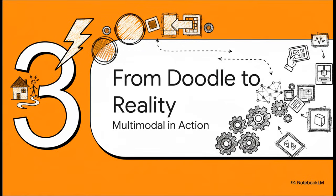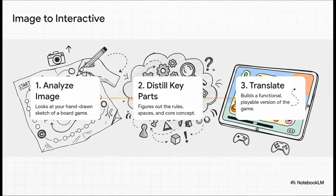Let's look at a mind-blowing example of how you can go from a simple doodle to working reality. Imagine you sketch out a board game on a napkin—you draw the spaces, write down the rules, the whole thing. You snap a picture and upload it. Gemini looks at the image, pulls out all the key parts, figures out the rules and goal of your game. Then—and this is the crazy part—it translates all of that into a fully playable, interactive game. You're playing the game you literally just drew, without writing a single line of code.